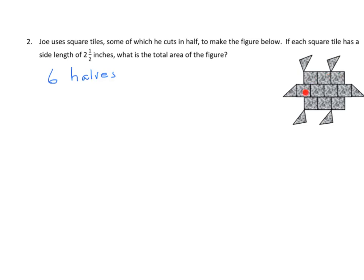And let's look at how many whole tiles we have. 1, 2, 3, 4, 5, 6, 7, 8, 9, 10. And I have 10 whole tiles. 6 half tiles equals 3 whole tiles. So, what do I have? I have a total of 13 whole tiles. So, we need to first find the area of each tile. And we have to multiply by 13.